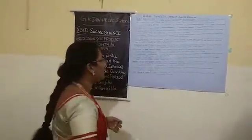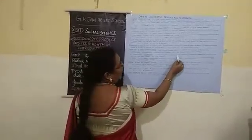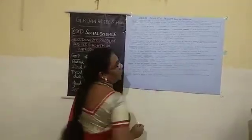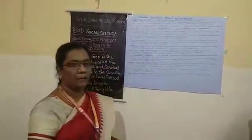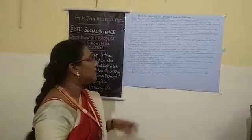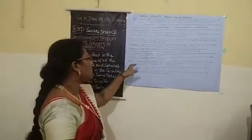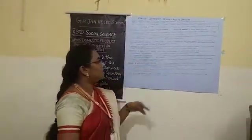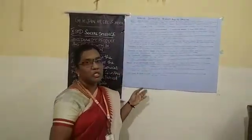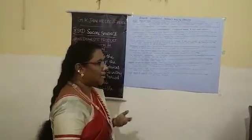The second is the industrial sector, also called the secondary sector, in which goods or commodities are produced by transforming raw materials. Important industries include iron and steel, jute, sugar, paper, and so on.